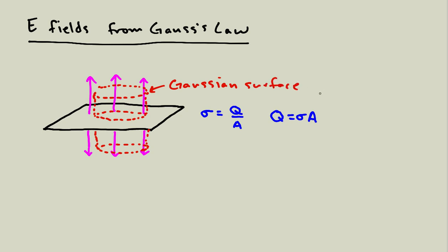To use Gauss's law to figure out something about the electric field, let me remind you what Gauss's law is. For a closed surface like this cylinder, the amount of flux is equal to the charge enclosed divided by epsilon naught. In this case, the charge enclosed depends on the amount of area enclosed in this surface — that's the area times sigma — and the flux is that divided by epsilon naught.